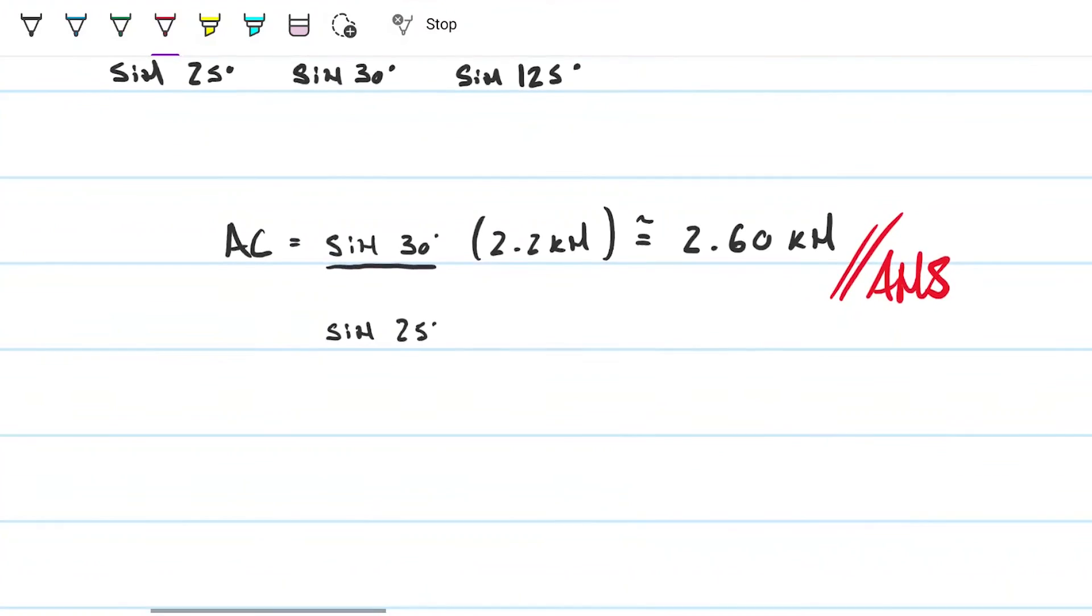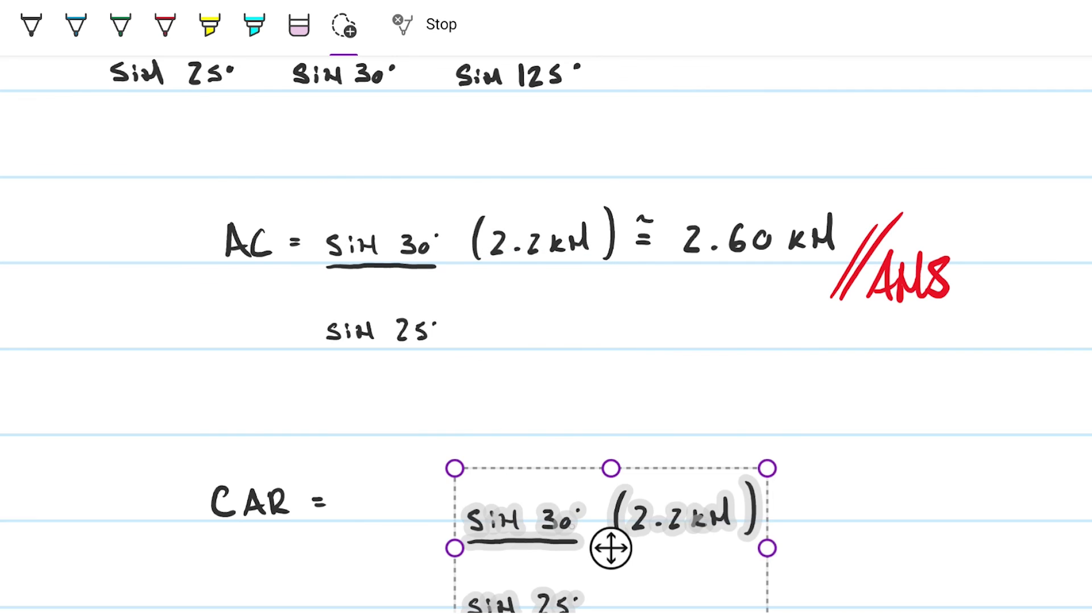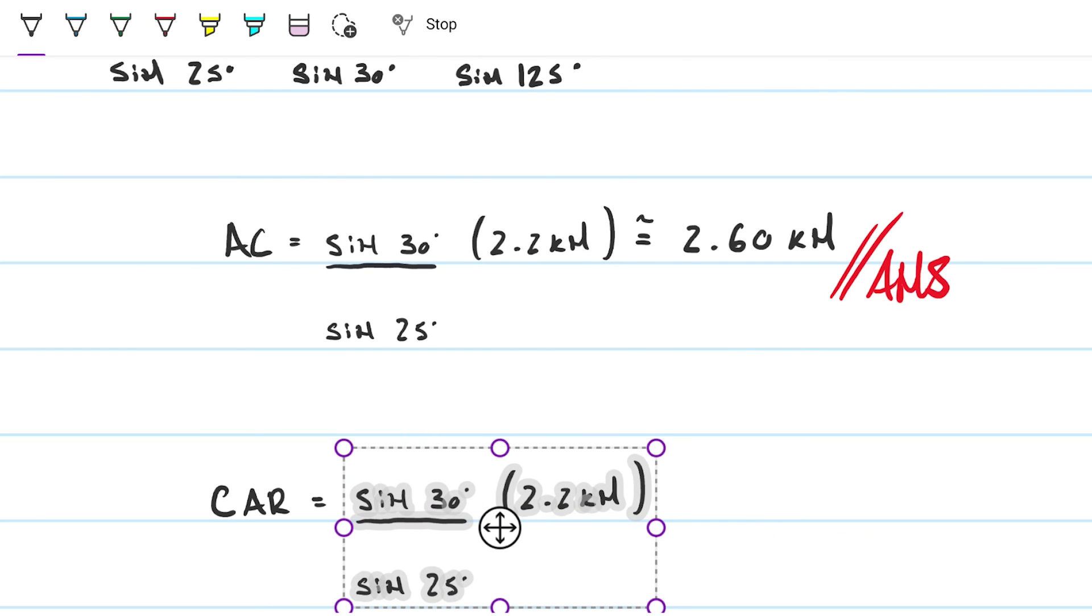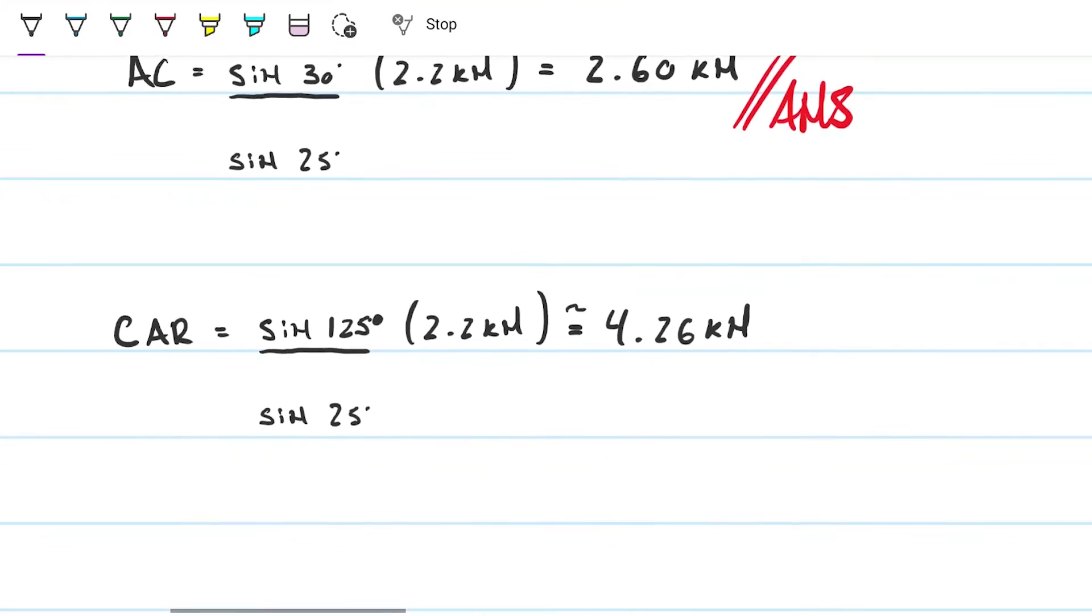Right? And then the other one, the car, can basically copy paste this, right? It's basically copy paste this. But instead of being sine of 30, it'll be sine of 125 degrees. That is 4.2642. Let's go ahead and approximate. Yeah, it keeps going. 4.26 is good enough. Okay. And that will be our other answer, right? Magnitude-wise.